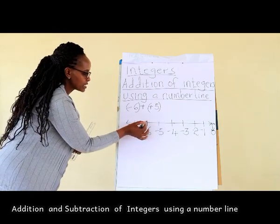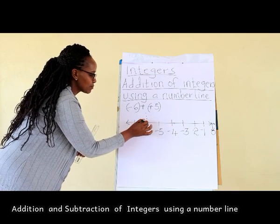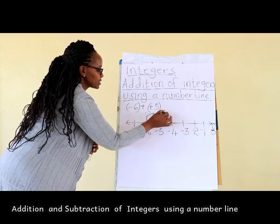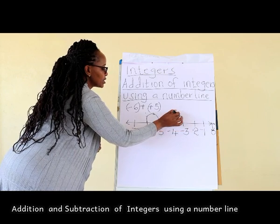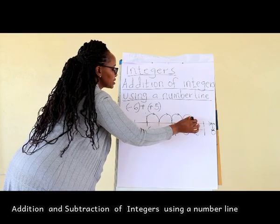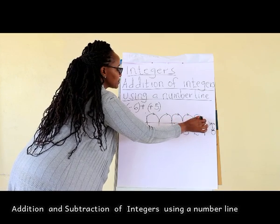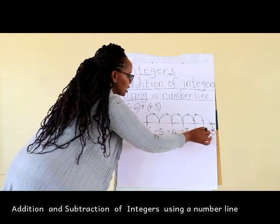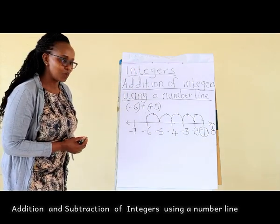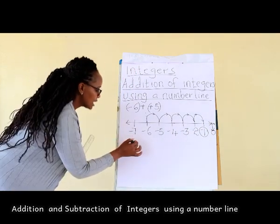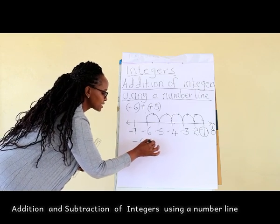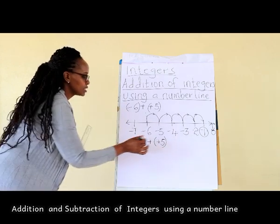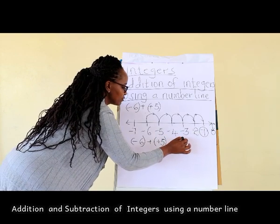Our starting point is negative 6. We take 1 step, 2 steps, 3 steps, 4 steps, 5 steps to the right of the number line. So our answer is negative 1. Therefore, negative 6 plus positive 5 gives us negative 1.